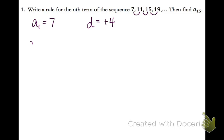So to write my rule, I'm going to put a sub n equals, put my first term plus my common difference times n minus 1. Now to simplify, I need to distribute 4 and then combine like terms.